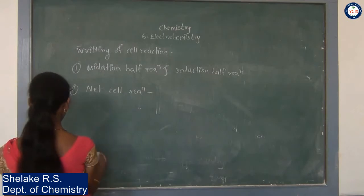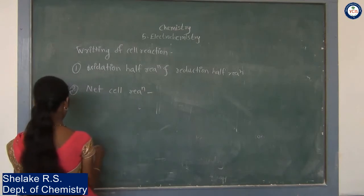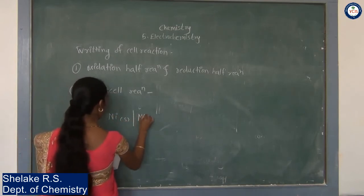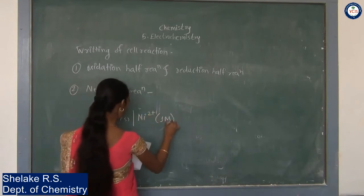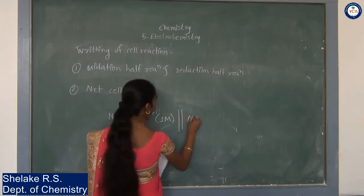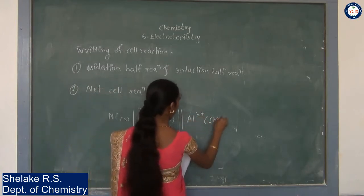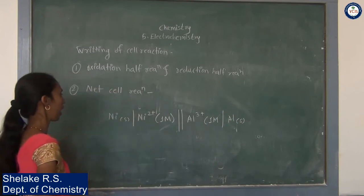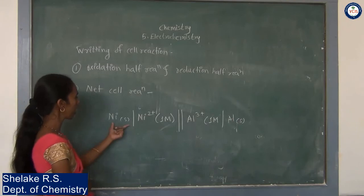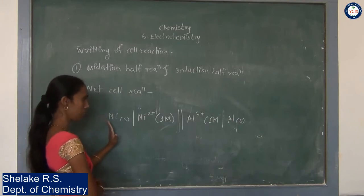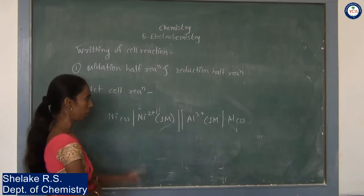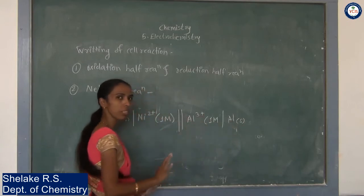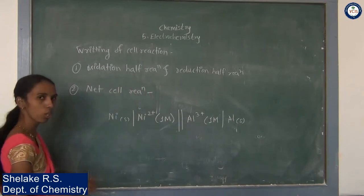Let us take an example. The cell is: Ni (solid) | Ni²⁺ (1 M) || Al³⁺ (1 M) | Al (solid). Nickel is written on the left-hand side, so nickel is the anode. Aluminium is written on the right-hand side, so aluminium is the cathode. At the anode, oxidation takes place; at the cathode, reduction takes place.